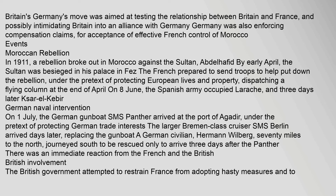In 1911, a rebellion broke out in Morocco against the sultan, Abdelhafid. By early April, the sultan was besieged in his palace in Fez. The French prepared to send troops to help put down the rebellion under the pretext of protecting European lives and property, dispatching a flying column at the end of April. On 8 June, the Spanish army occupied Larache, and three days later, Ksar-el-Kebir.